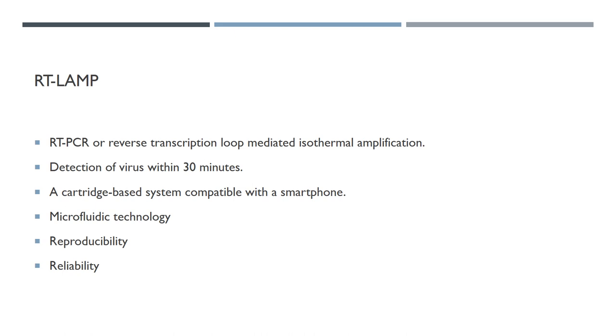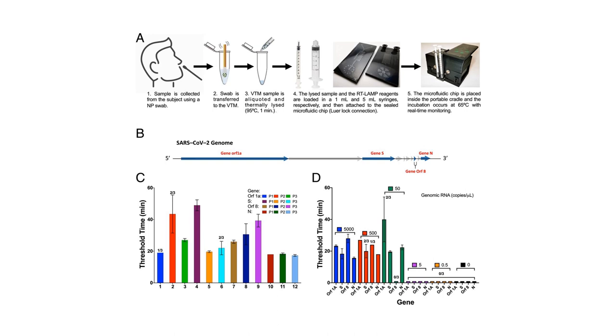There is another method called reverse transcription, which is a LAMP PCR. It is a loop-mediated isothermal amplification method, which can detect viruses. It can be adopted to microfluidic technology, which means you do not have to handle the sample at any point in the diagnostic procedures. It is handled entirely by the robot. But the problem with this kind of technology is reproducibility and reliability.